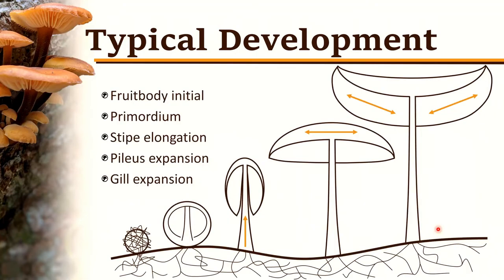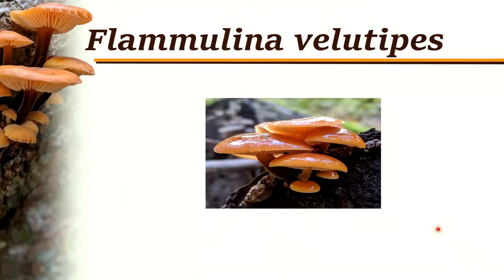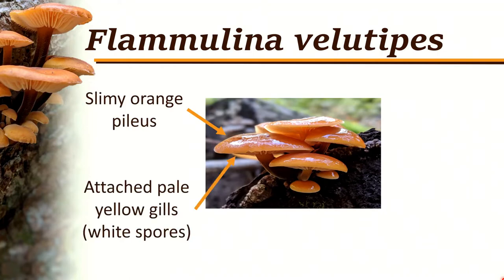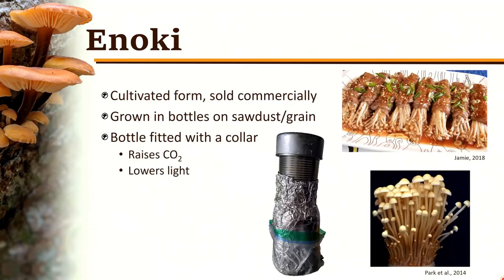Fortunately, for the rest of my presentation I can assume the model of mushroom development is correct because my study organism is a gilled mushroom. My study organism is Flammulina velutipes. In the field you can recognize it by its slimy orange pileus, attached pale yellow gills leaving a white spore print, a velvety black stipe, clustered growth, and growth on hardwoods. You can also get this species in the grocery store, but it looks completely different there — pale, long, spaghetti-like form with tiny pileus and underdeveloped gills. In stores it's sold as enoki or enokitaki, the Japanese names.